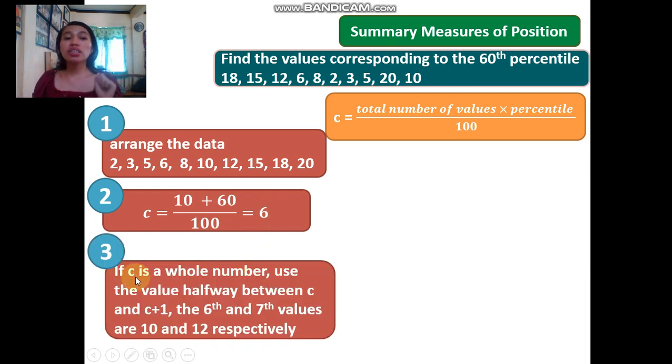The third step: if C is a whole number, use the value halfway between C and C+1. Our C is 6, so we need the value between the 6th and 7th positions.